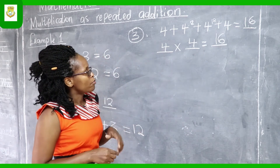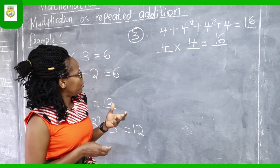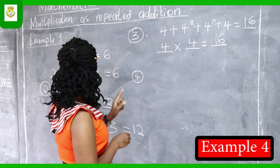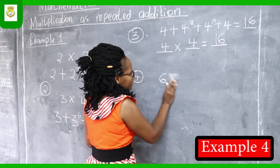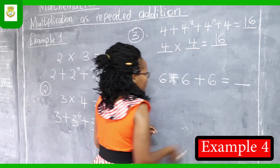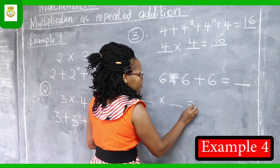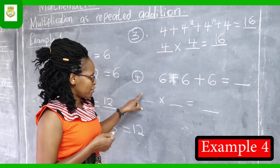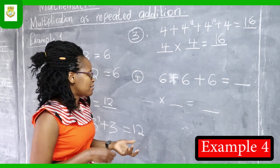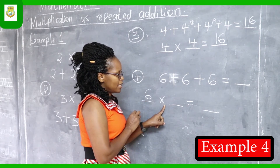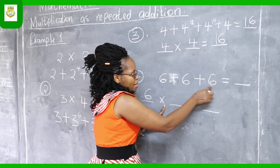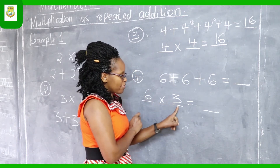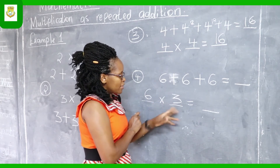Let's give another example where the numbers are different. We have six plus six plus six. So we have dash times dash equals dash. The digit six is added three times. In the first space we write the number being added, which is six. How many times is six added? Let's count: one, two, three — it is added three times. So we write three in the second space. This means that six is multiplied by three, meaning six is added three times.